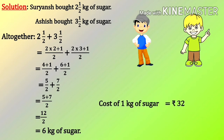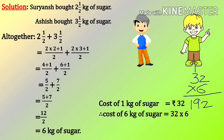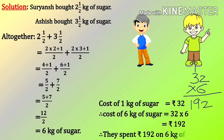Cost of 1 kg of sugar is Rs. 32. Therefore, cost of 6 kg of sugar = 32 × 6 = Rs. 192. Therefore, they spent Rs. 192 on 6 kg of sugar.